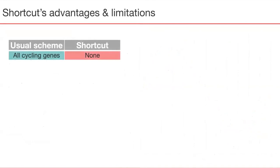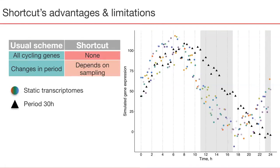All of this sounds great. However, the shortcut possesses several limitations one has to be aware of. First of all, since we are taking only one sample from each genotype, we will not be able to detect all genes which cycle in that genotype and perform comparisons of genotypes based on this metric. Next, our ability to catch a certain genotype which has a deviation in period from the normal 24 hours depends a bit on luck.